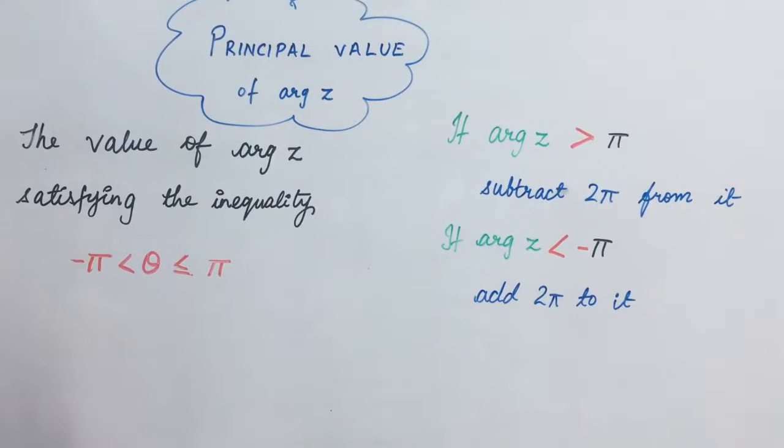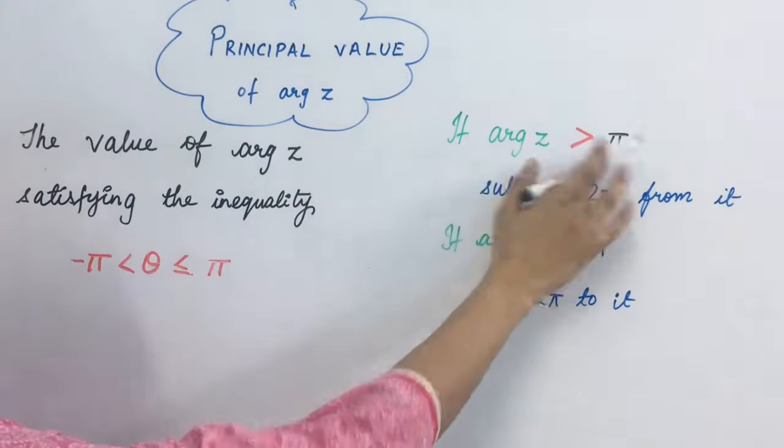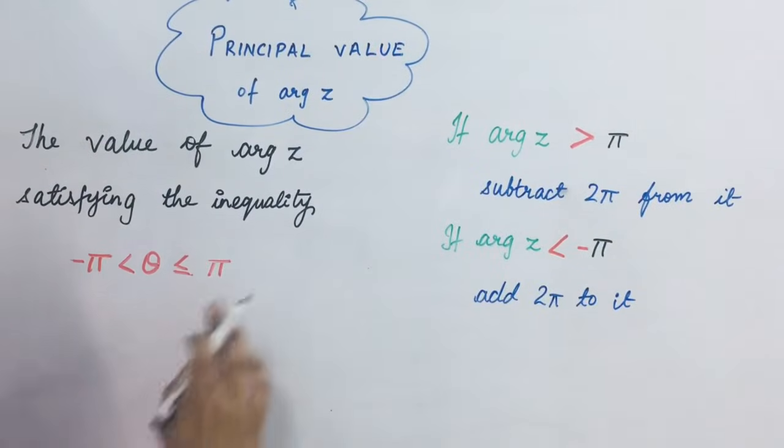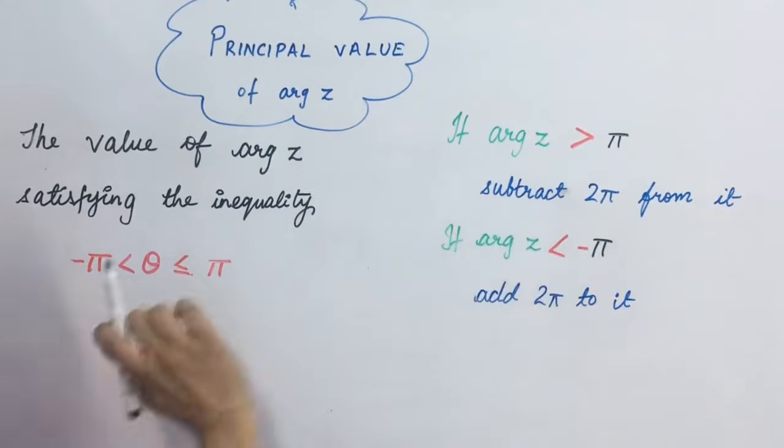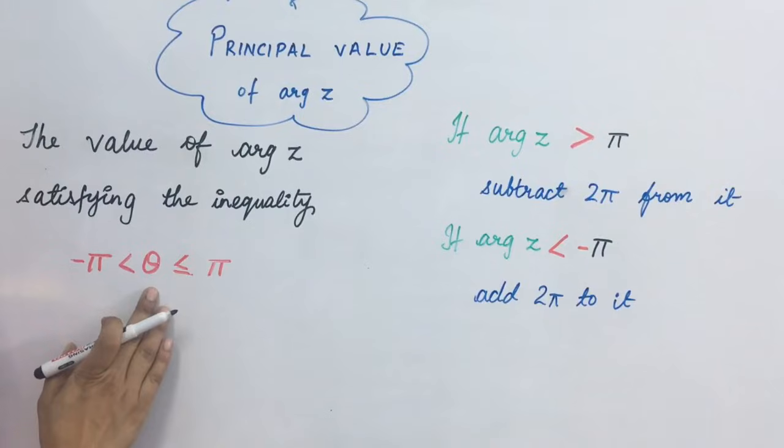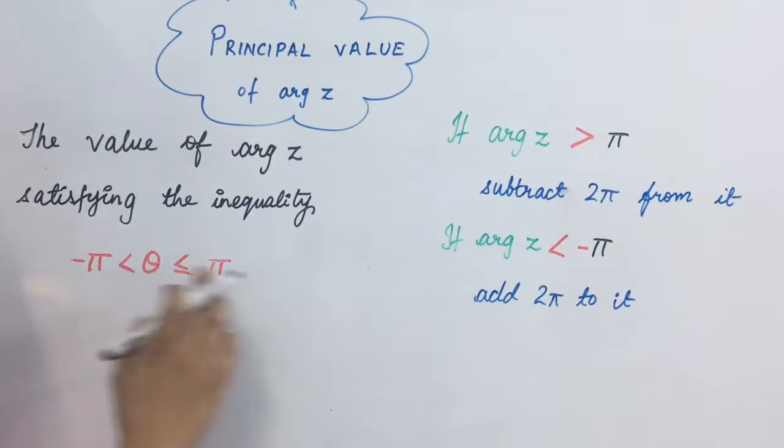That value will be called the principal value of argument z. Now, the two cases arise. If its value lies outside this range, then what will happen? First case, if we take, that if argument z is greater than pi, then what will we do?